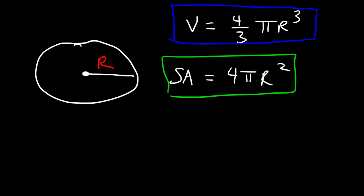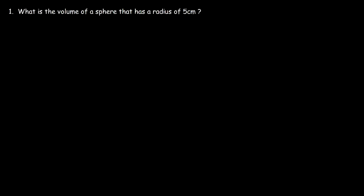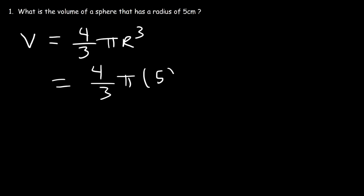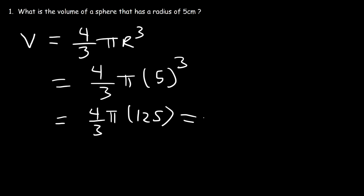And you also need to know how to use them. So let's start with this problem. What is the volume of a sphere that has a radius of 5 centimeters? Let's start with the equation: V is equal to 4 over 3 pi r cubed. All we need to do is plug in the value of r. So r is 5. 5 to the 3rd power is 5 times 5 times 5, that's 125. 125 times 4 is 500. So the answer is 500 pi divided by 3, and the units are cubic centimeters.